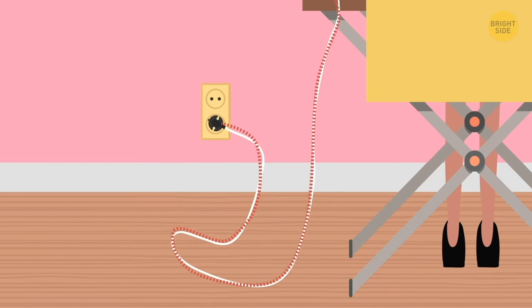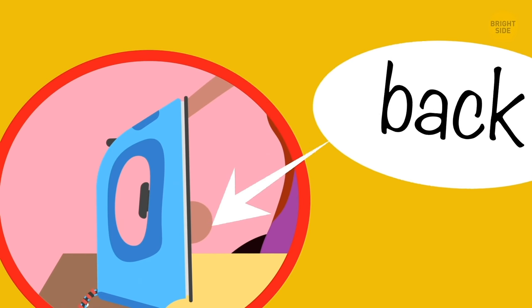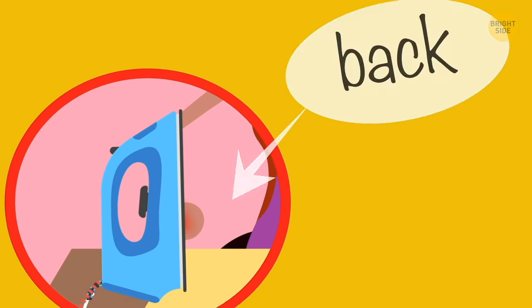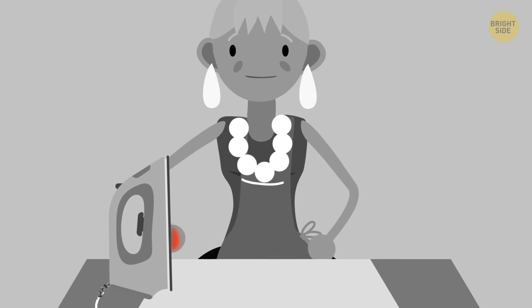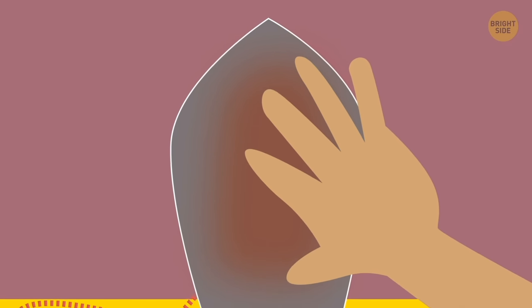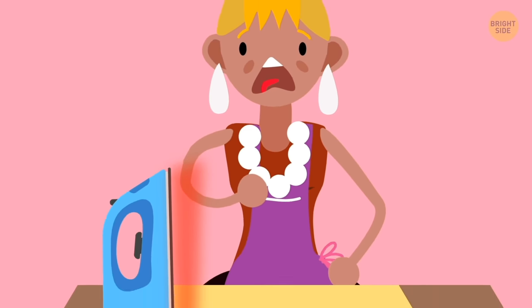If you suspect that some object might be electrified, but you have to check it, touch it with the back of your hand. This way, if your suspicions are correct, you'll get a charge out of it, and you'll be able to snatch your hand back. But if you touch this object with your palm, the electric charge will make your hand form a tight fist, and you won't be able to draw it back.